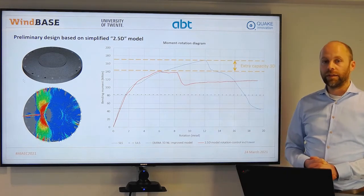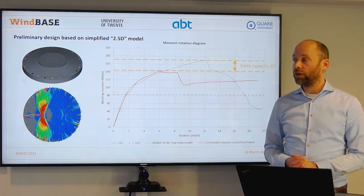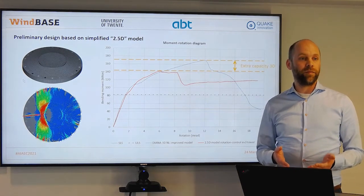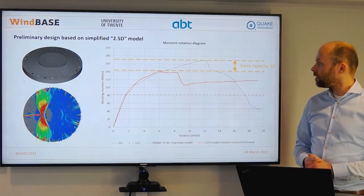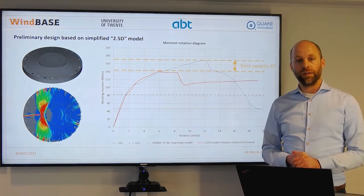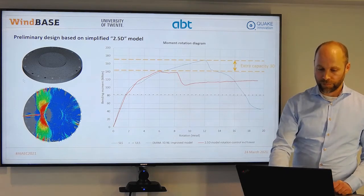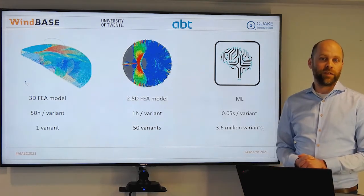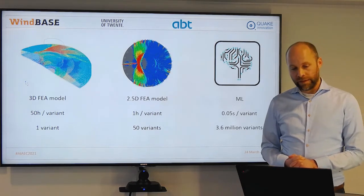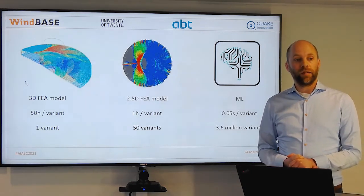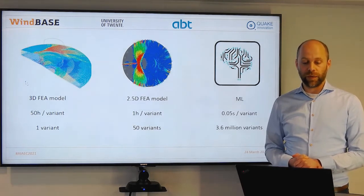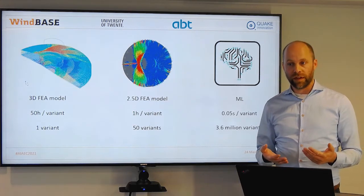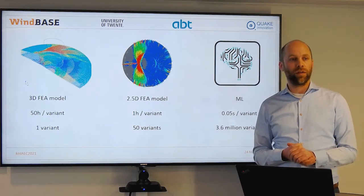Therefore, we have developed a simplified finite element model, which is also nonlinear. Because it's simplified in certain aspects, it can calculate roughly the same thing in one hour's time. But it's conservative compared to the full 3D model. We are not really satisfied by the ability to calculate only one variant per hour, and therefore we wanted to develop a model which is much faster so that we can calculate millions of variants and get insight into the full design domain. And that's where machine learning comes into play.